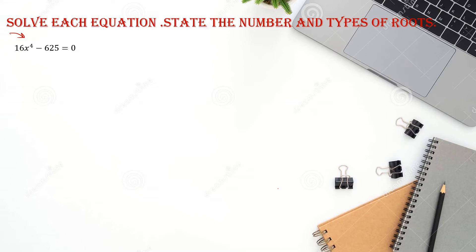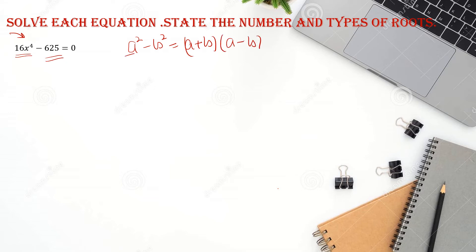Here you have 16x to the power 4 minus 625. The most important thing is that we can write this equation in the form of a square. We know the formula a squared minus b squared equals (a + b)(a - b). So a squared is 16x to the power 4, and b squared is 625.